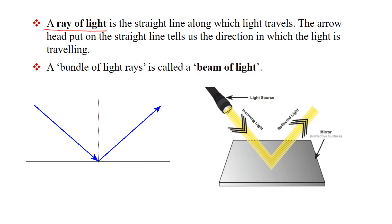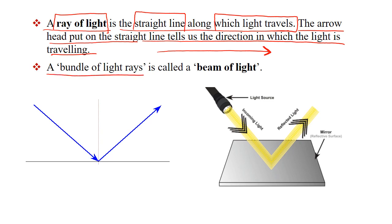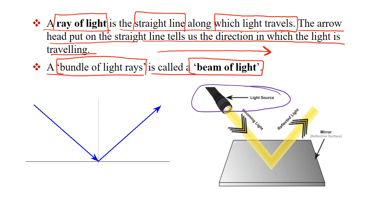A ray of light is the straight line along which light travels. Ray of light जो हम draw करते हैं वो एक straight line होता है जिसकी direction उस direction में होती है जिसमें light travel कर रही है. The arrow head put on the straight line tells us the direction in which the light is traveling. A bundle of light rays is called a beam of light — जैसे torch जो light emit करता है वो होता है beam of light.